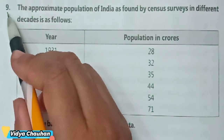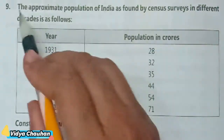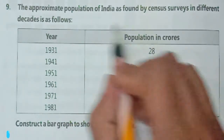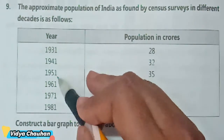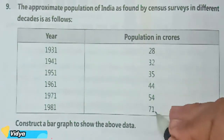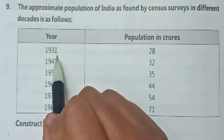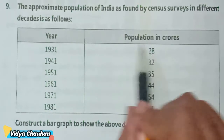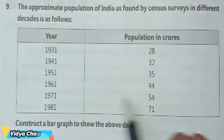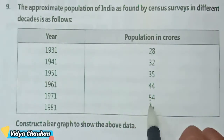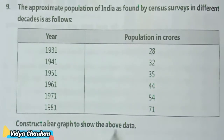I have taken a question from your book exercise. The question says: the approximate population of India was found by census survey in different decades. Decade means at an interval of 10 years. The data is given in crores: in 1931 the population was 28 crore, in 1941 it was 32 crore, in 1951 it was 35 crore, in 1961 it was 44 crore, in 1971 it was 54 crore, and in 1981 it was 71 crore.